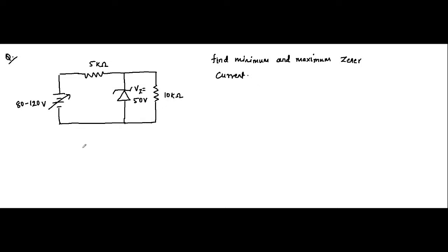First we have to determine the state of the Zener diode. Since both the series resistance value and load resistance value are given, it is a very good choice to apply the voltage division rule to determine the state. We will do this for both cases — 80 volt and 120 volt.